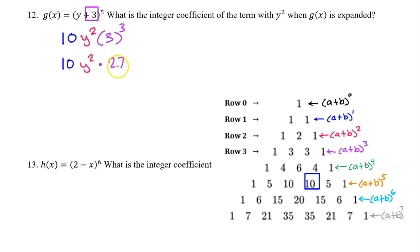3^3 is 27. And 10 times 27 is 270. So this is the coefficient of the term with y^2.